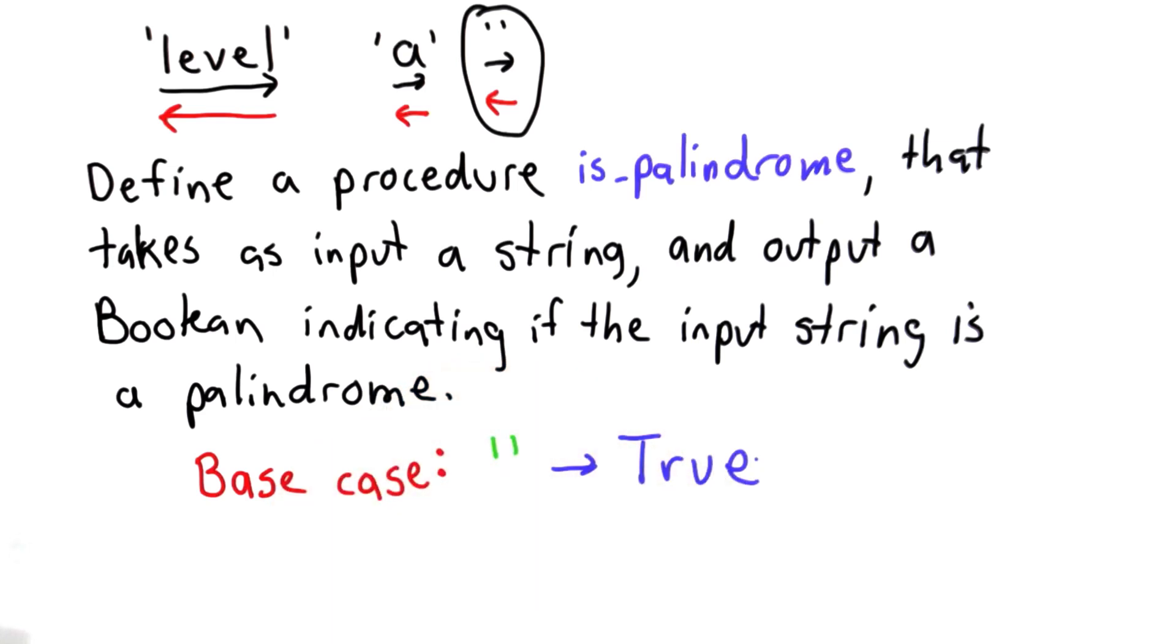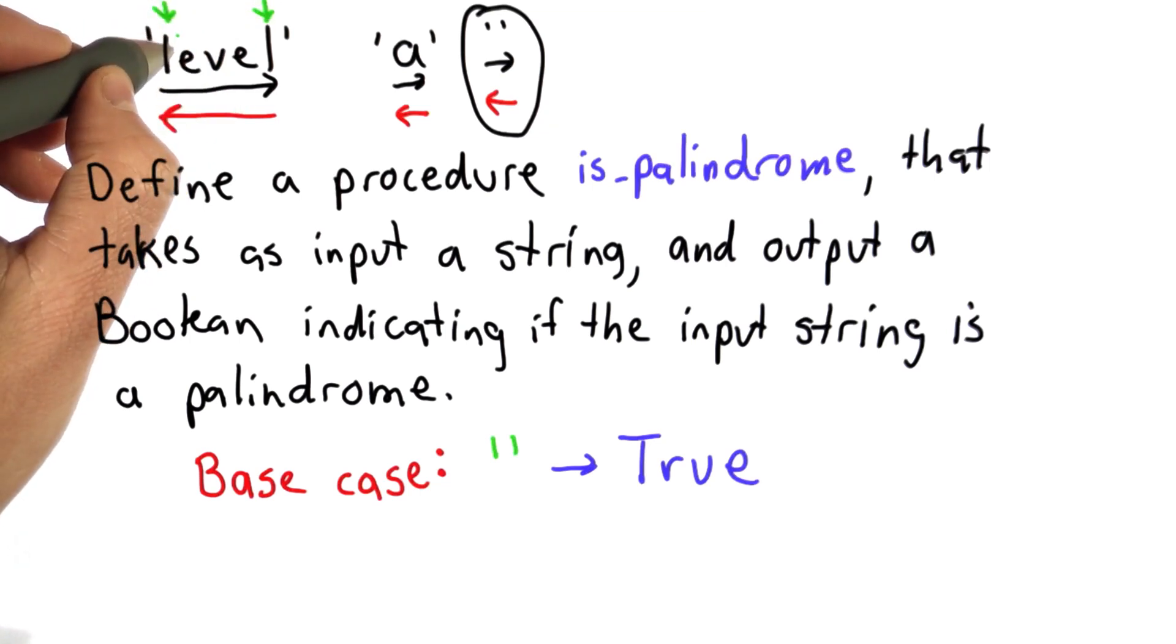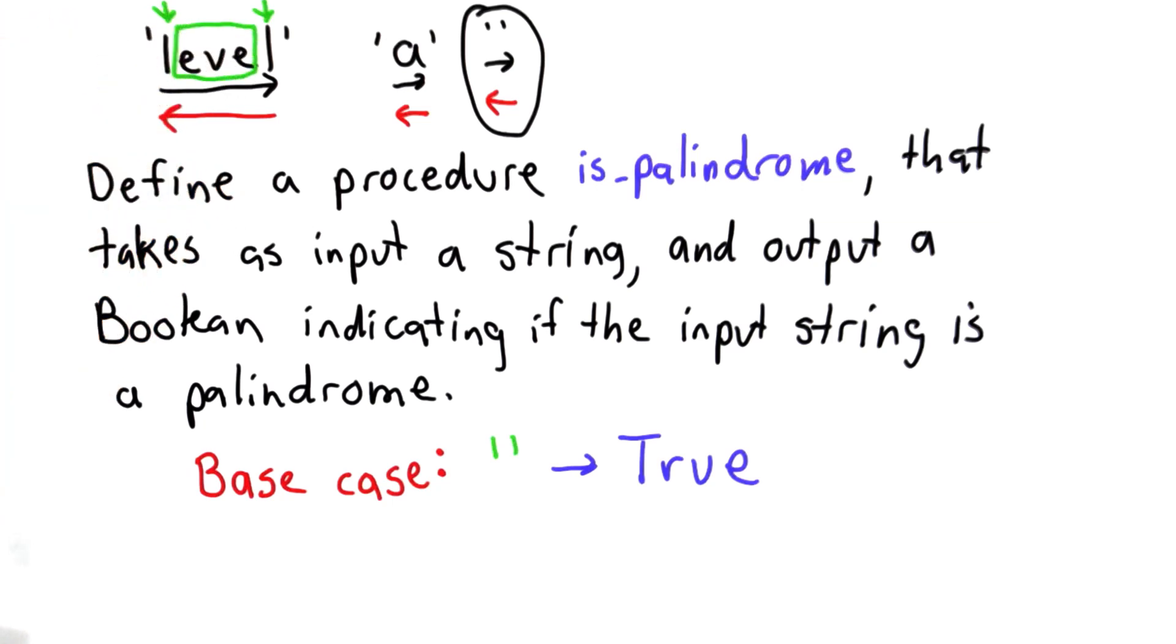What if the input is not an empty string? Well then, one way to solve that would be to look at the first letter of the string and look at the last letter of the string. If those two are equal, then it might be a palindrome. It's a palindrome if all the ones left over in the middle are also a palindrome.